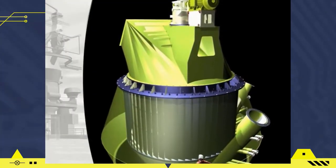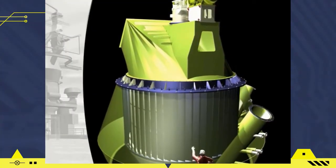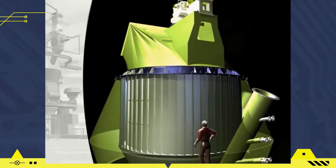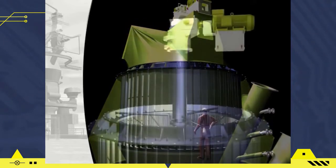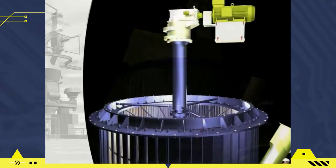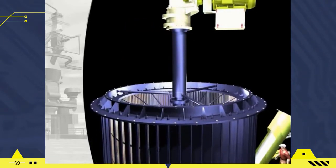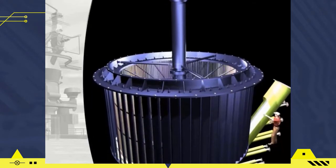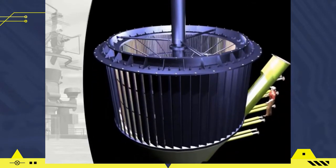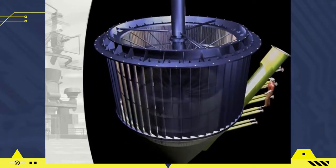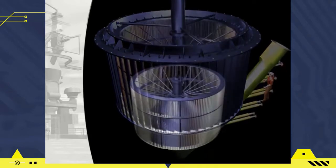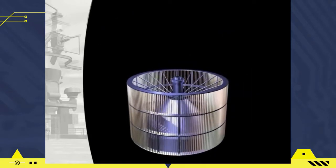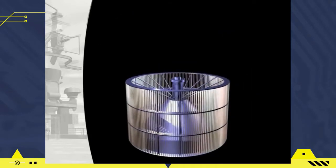The separator is a tool that serves to separate the fine material and coarse material from the milling process. The coarse material is returned to the mill and the fine material becomes the product. The higher the rotation of the separator rotor, the smoother the resulting product, and vice versa.